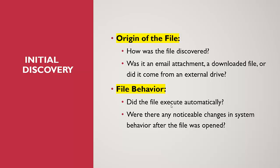The second most important thing when dealing with initial discovery is file behavior. By checking the system logs and security logs, you have to see whether the file executed automatically or was triggered by the user. Check for any noticeable changes in the system's behavior after the file was opened. If you're running any file integrity monitoring software, you can compare against the previous state. These are the two important things to do in the initial stage to discover the ransomware and its associated properties.